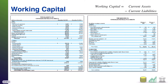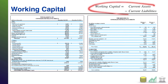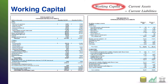Working capital, if you are already familiar with what's known as the current ratio, is going to look very similar, because working capital uses the same accounts as the current ratio — it uses current assets and current liabilities. Only, as opposed to the current ratio, which divides these two numbers, working capital actually subtracts them.